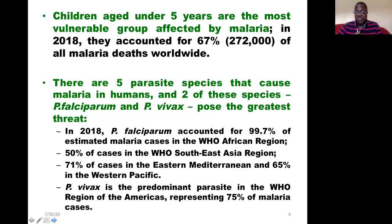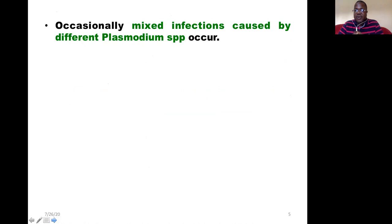In the WHO Southeast Asia region, 50% of cases were caused by Plasmodium falciparum. In the Eastern Mediterranean region, 71% of cases were caused by Plasmodium falciparum, and 65% in the Western Pacific. Plasmodium vivax was the predominant parasite in the WHO region of the Americas, representing about 75% of all malaria cases.